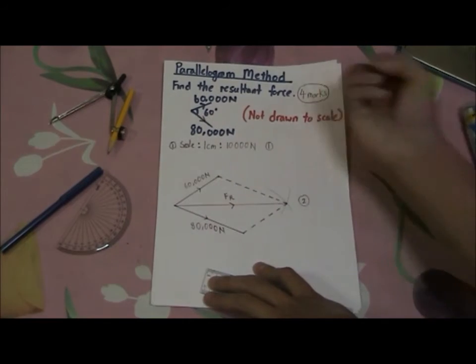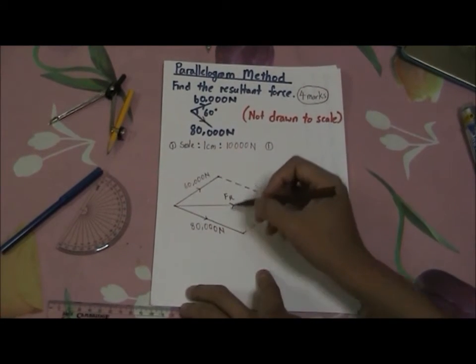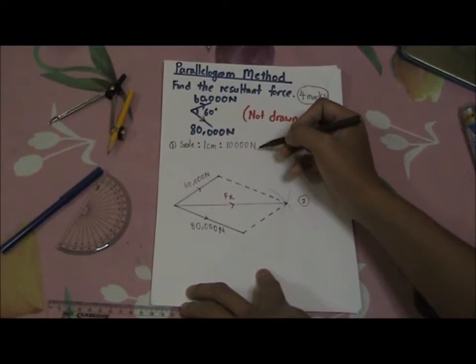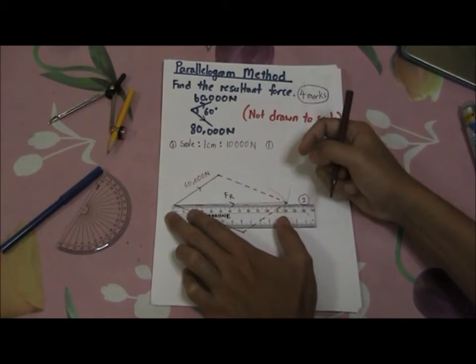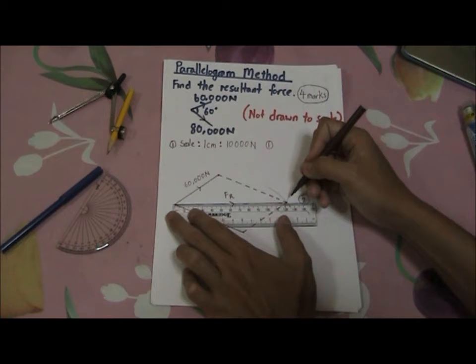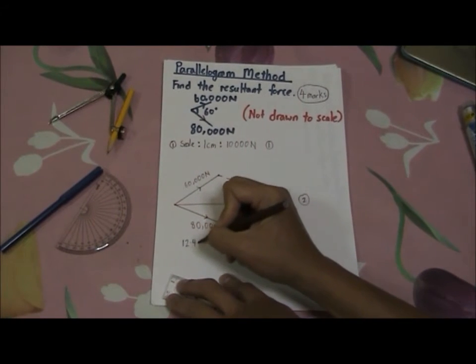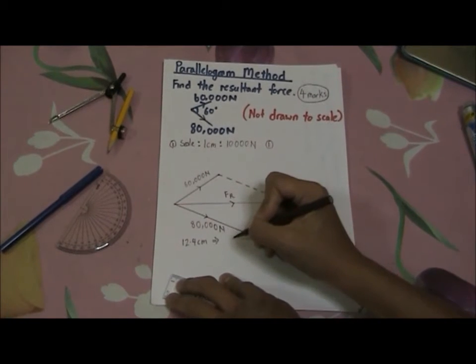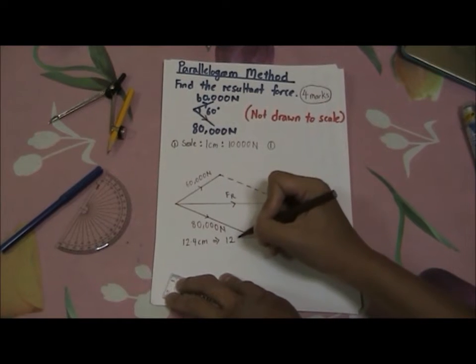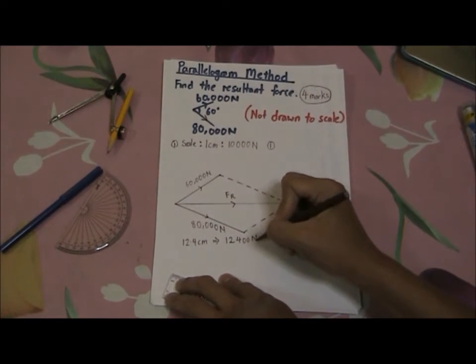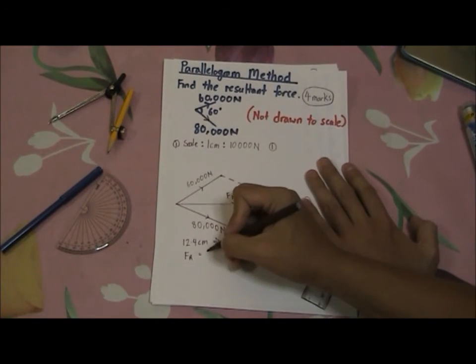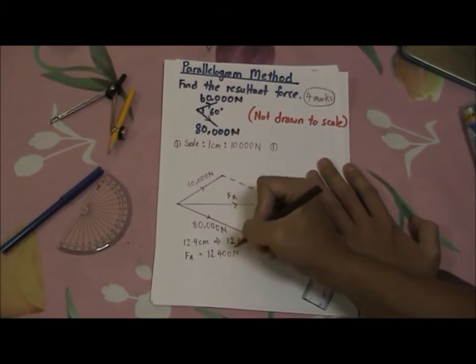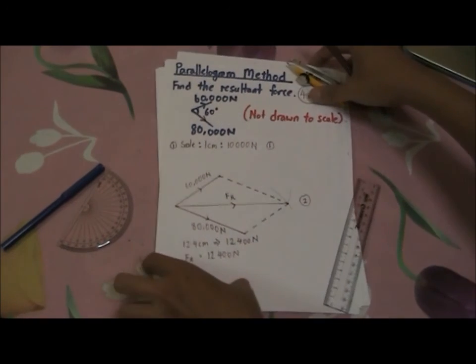Write down here, resultant force. After we have drawn the resultant force, we have to convert the length back to the newton unit. So now let's measure what is the length of this resultant force. It's about 12.4 cm. Let's convert it back to newton. It will give us 124,000 newton. So let's write down here, the resultant force is equal to 124,000 newton. This will give us our third mark.